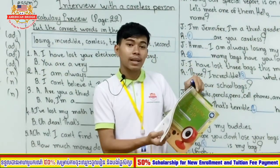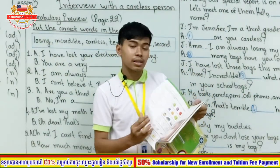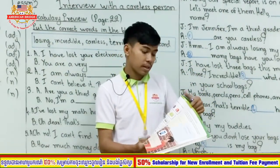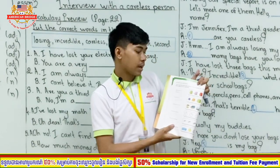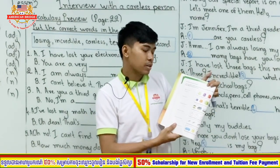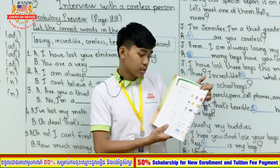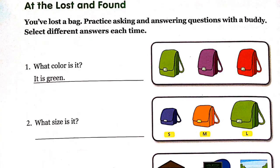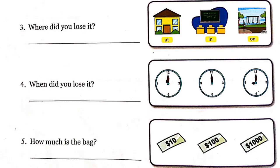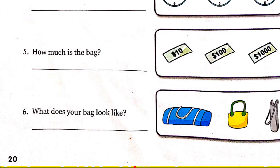Then go to page 20: At the Lost and Found. This exercise is very easy — just look at the picture, read the questions, and answer by yourself. But you must answer with full sentences. For example, for number one 'What color is it?' you are given three colors: green, gray, and orange — use whichever you want. Do from number one to number six.